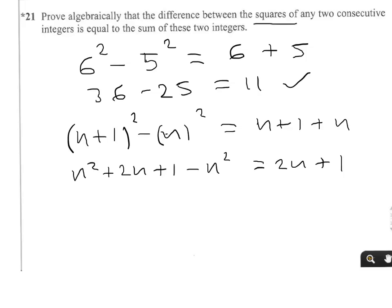So on the left-hand side, the n squareds cancel. And you're left with 2n plus 1 equals 2n plus 1. So that's it. You've proved it. That's the answer.